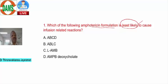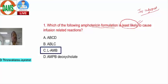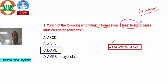All amphotericin B formulations are given as IV infusions and carry a risk of causing fever, chills, and infusion-related reactions. According to Goodman and Gilman, amphotericin B colloidal dispersion has the highest chance of causing infusion reactions, followed by conventional amphotericin B deoxycholate, then amphotericin B lipid complex.